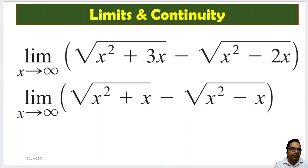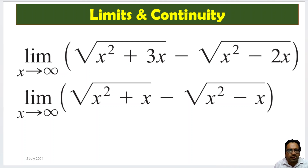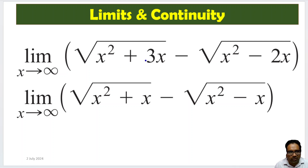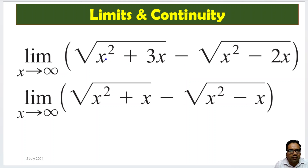Hey friends, here we are given these limits. x tends to infinity in both these cases, and we have square root of x squared plus 3x, which is kind of square root of some quadratic equation minus square root of another quadratic equation, in both the cases.